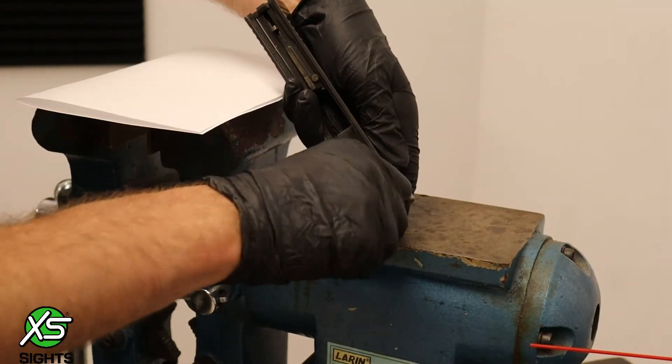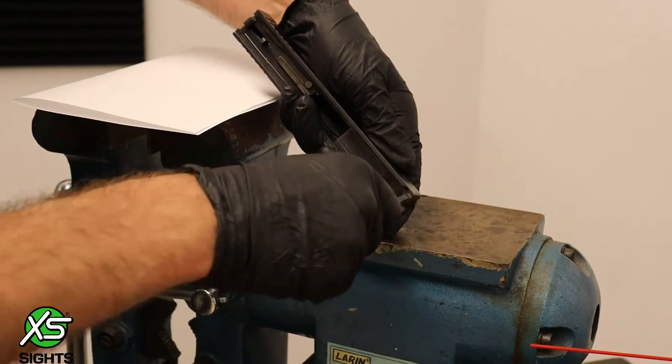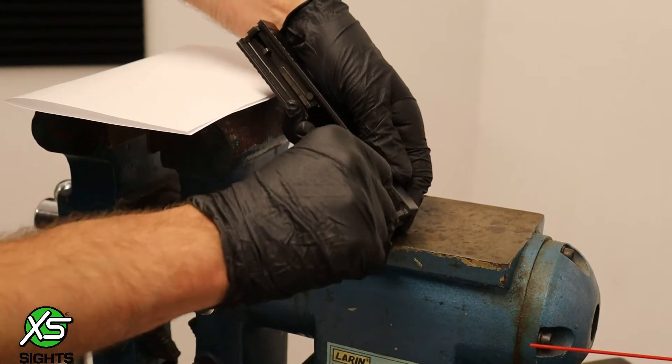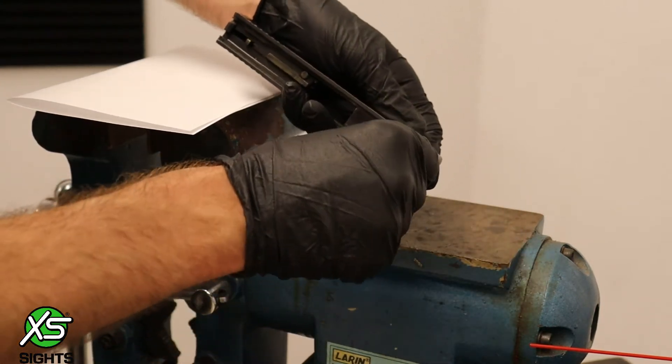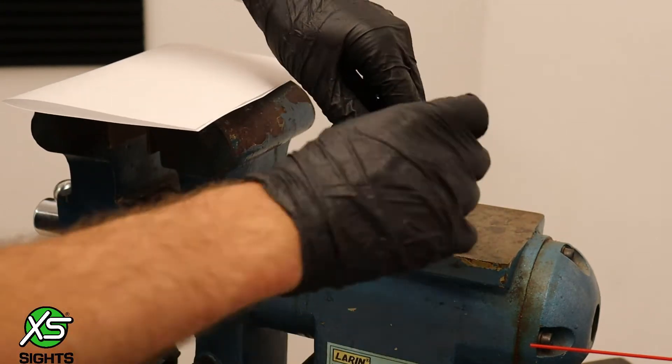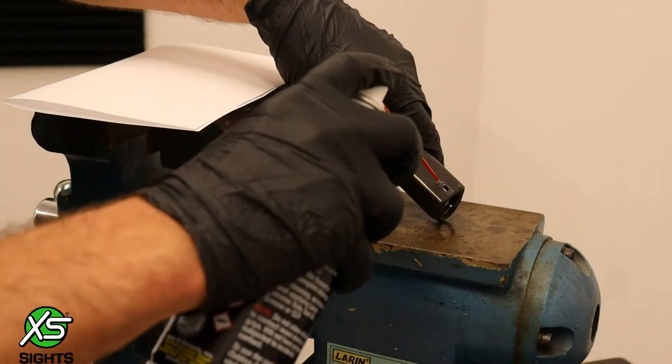Uninstall the factory front sight using the Glock tool provided in the kit. De-grease the sight and slide.